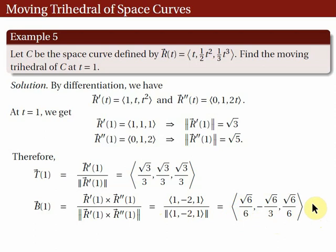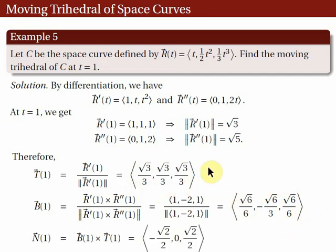Finally, we solve for the unit normal vector at t = 1 using the right-hand rule: N(1) = B(1) × T(1). Since we already have B(1) and T(1), we compute the cross product and verify the result. These are the moving trihedral of c at t = 1: T(1), B(1), and N(1). In the next video, we will introduce the T and B frame. Thank you.